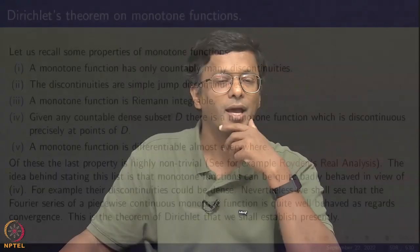Monotone functions can be pretty bad, but they also have some pleasant features, some redeeming features. A monotone function has only countably many discontinuities. The discontinuities are simple jump discontinuities. A monotone function is Riemann integrable. Given any countable dense set D, there is a monotone function which is discontinuous precisely at the points of D. For example, you can have the set of rationals and construct a monotone function which is discontinuous at every rational and continuous at every irrational. A monotone function is differentiable almost everywhere. The last property is highly non-trivial.